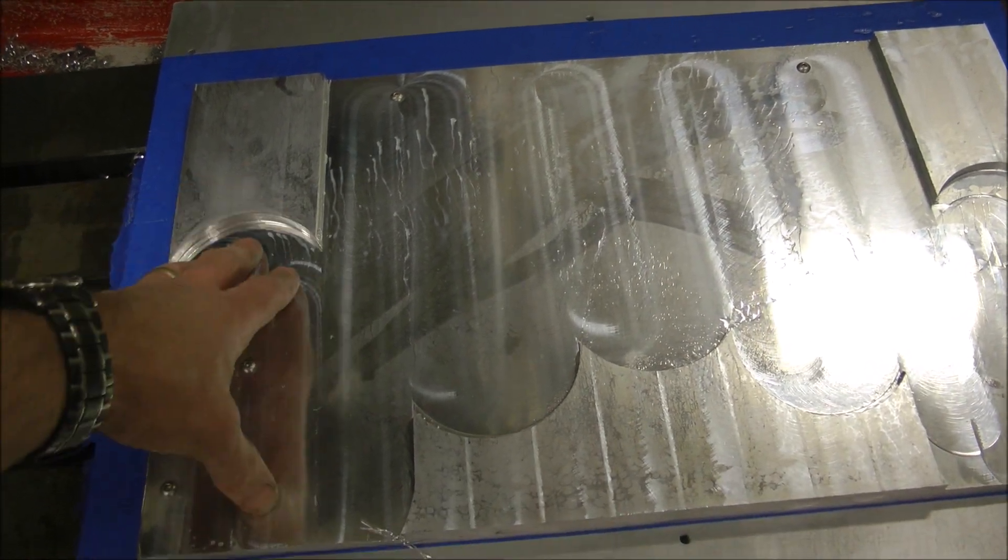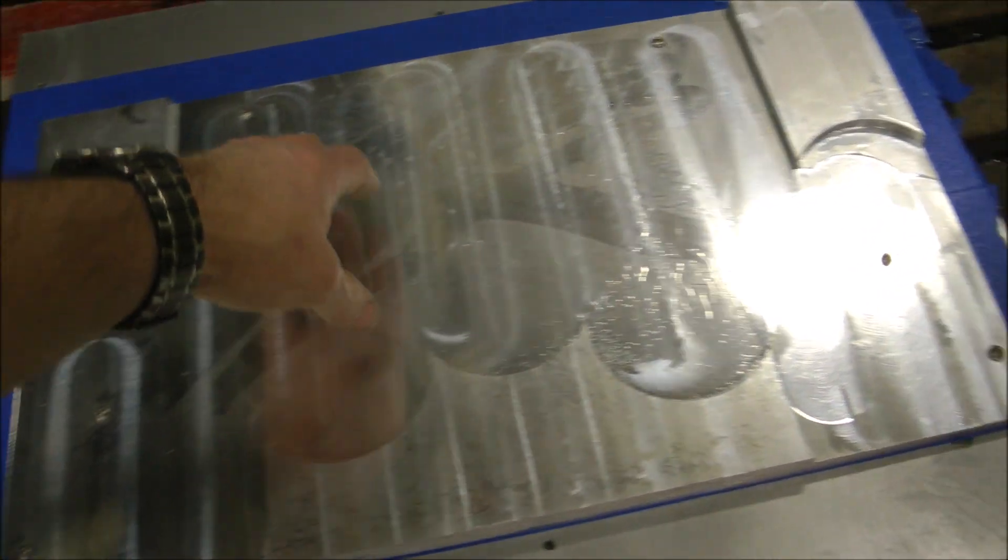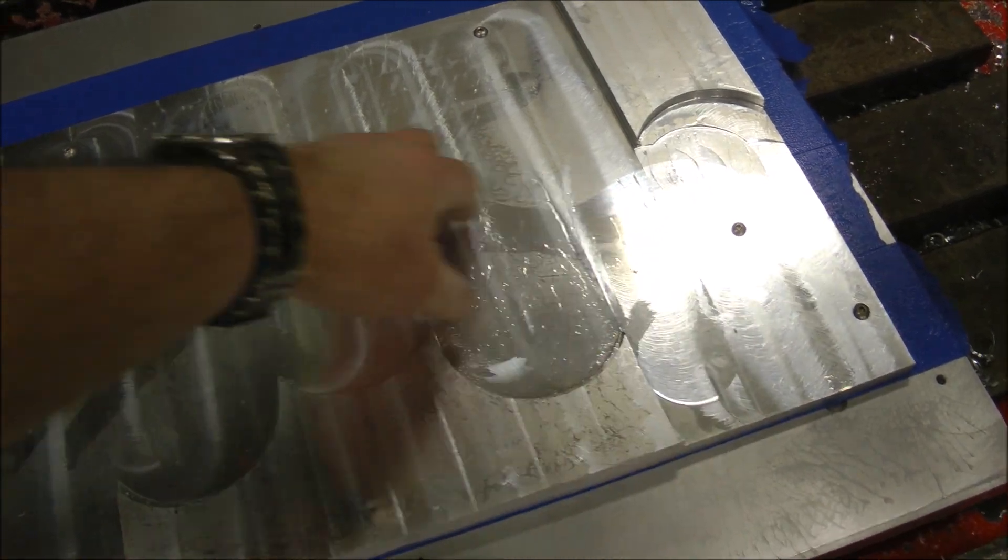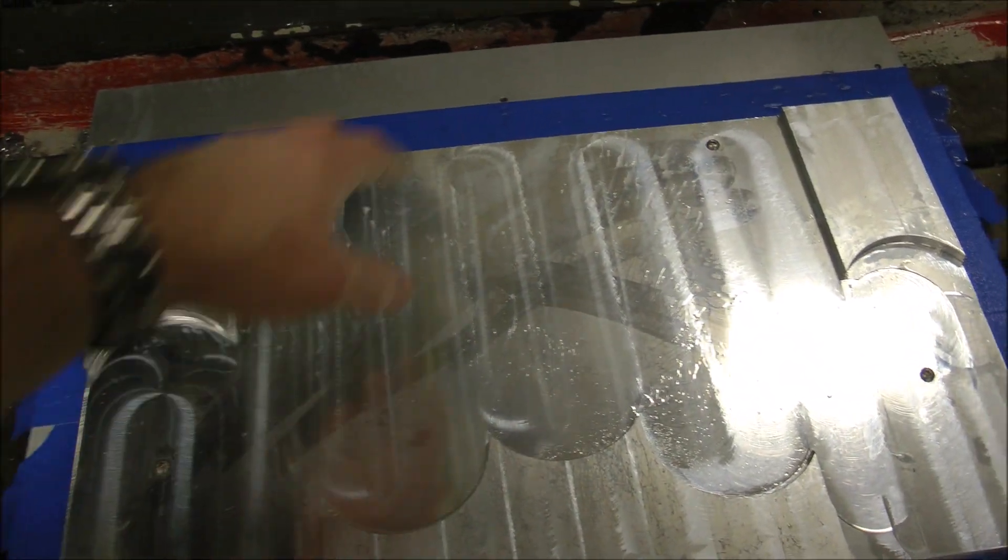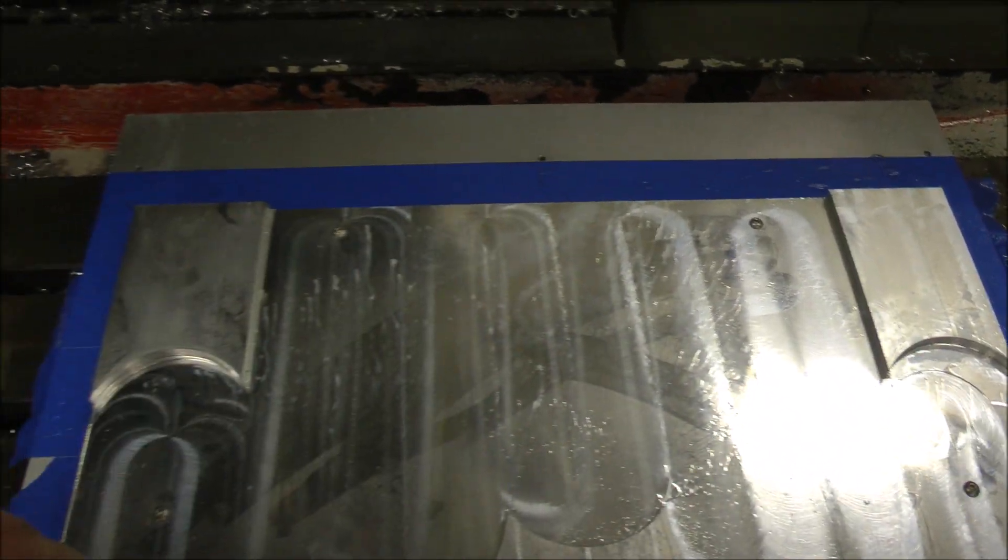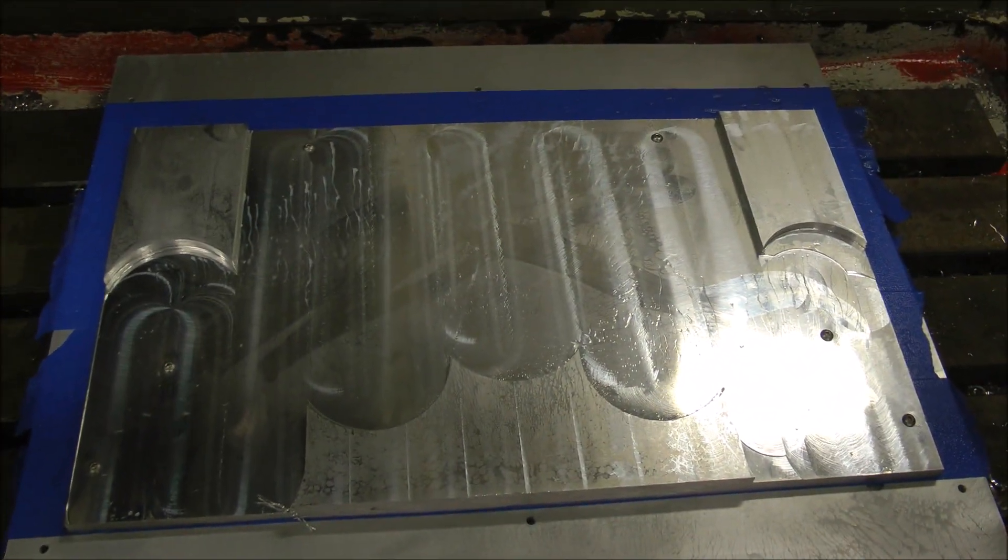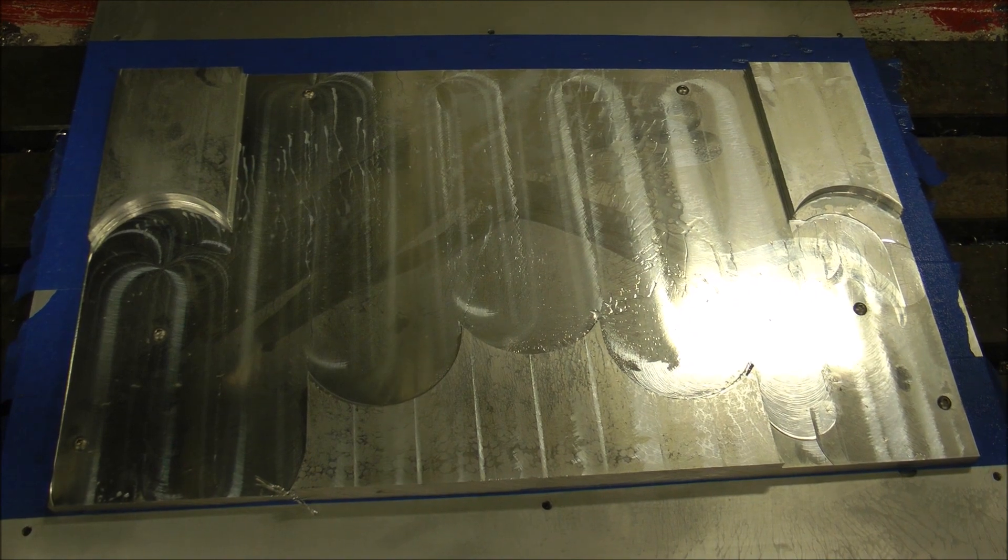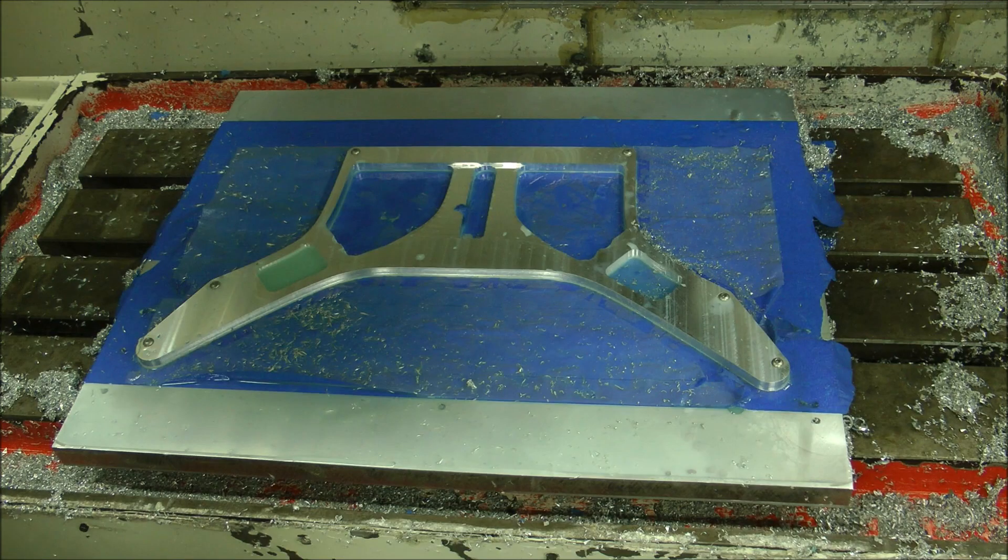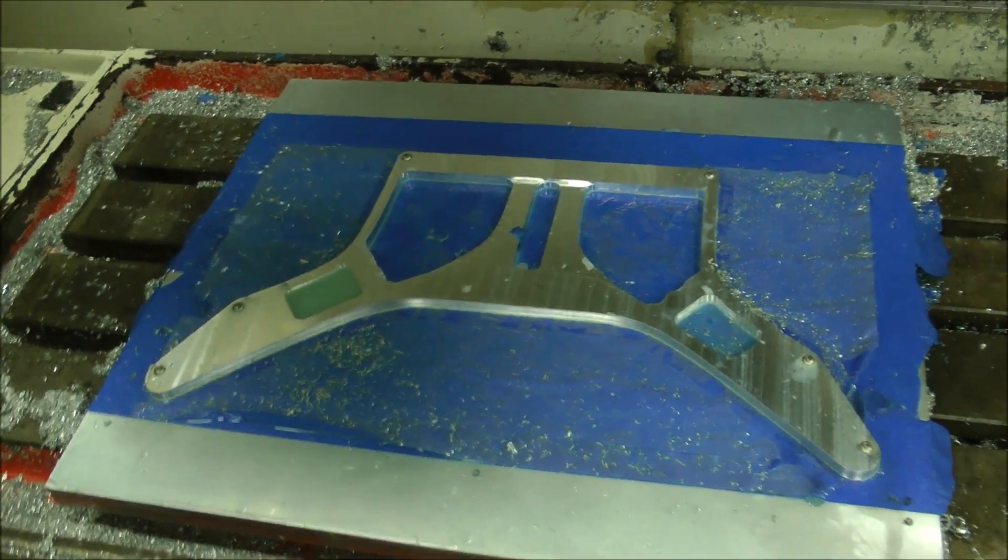As you can see here, he's thinned down this three-quarter inch plate in the areas that he's going to now cut out the brace that's going to go from the PDU here to the two inverters, one on each side. It's going to look really cool.